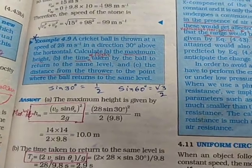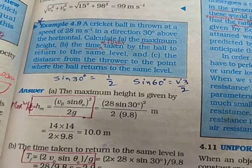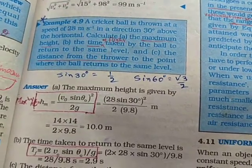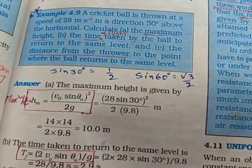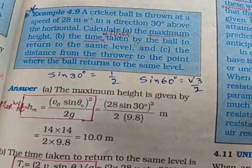Students of class 11, today we are going to discuss Example 4.9. In this, a cricket ball is thrown at a speed of 28 meters per second in a direction 30 degrees above the horizontal direction.